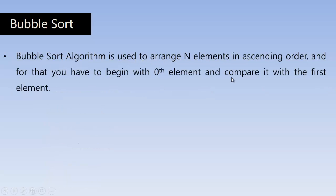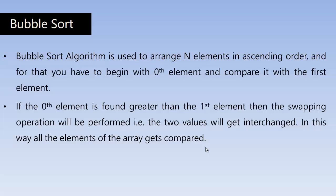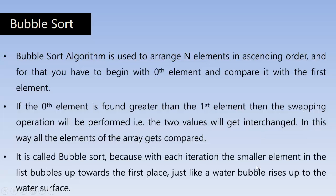Bubble Sort algorithm is used to arrange n number of elements in ascending order. You begin with the zeroth element and compare it with the first element. If the zeroth element is found greater than the first element, then the swapping operation will be performed — we interchange its position with the second element and swap them. It is called Bubble Sort because with each iteration the smaller element in the list bubbles up towards the first place, just like a water bubble rises up to the water surface.